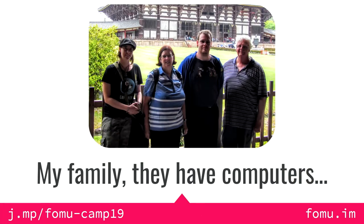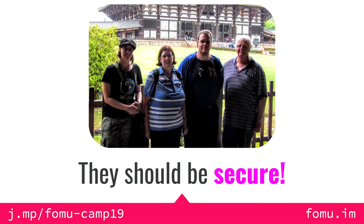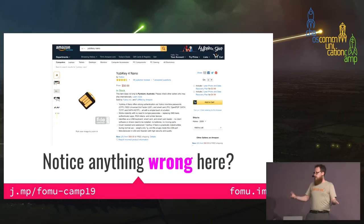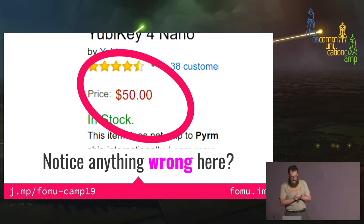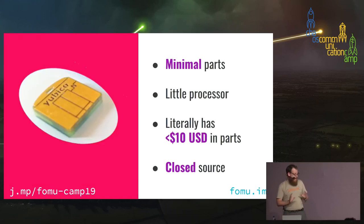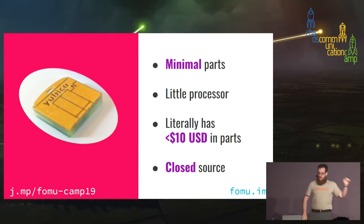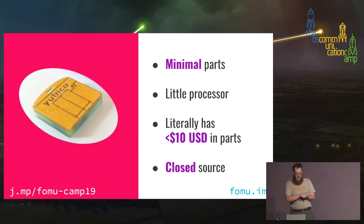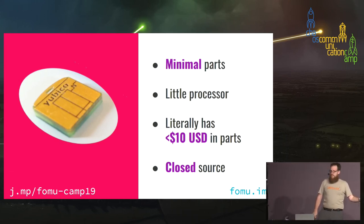My family have computers and, like everyone, they deserve to be secure. My work gave me YubiKeys, which help prevent phishing, and I thought I should get them for my family. But then I noticed something wrong — I love my family, but not that much when it's five computers per person and that adds up quickly. It also rubbed me the wrong way that this security device is closed source.